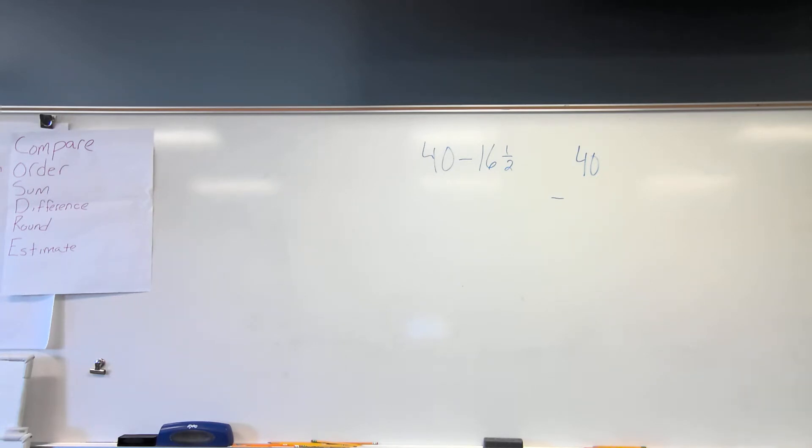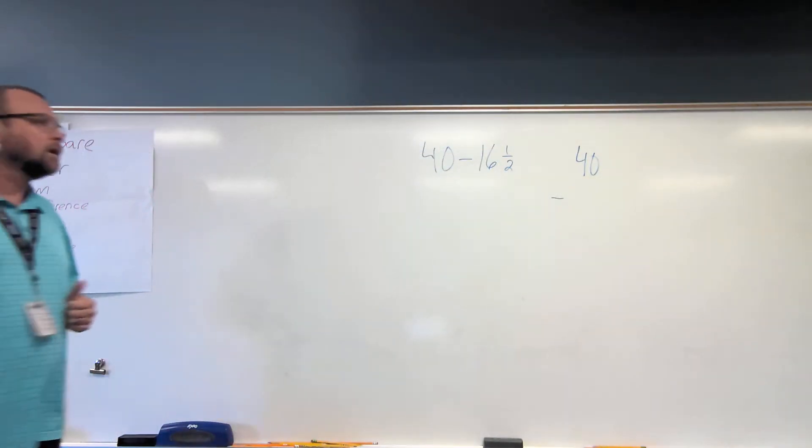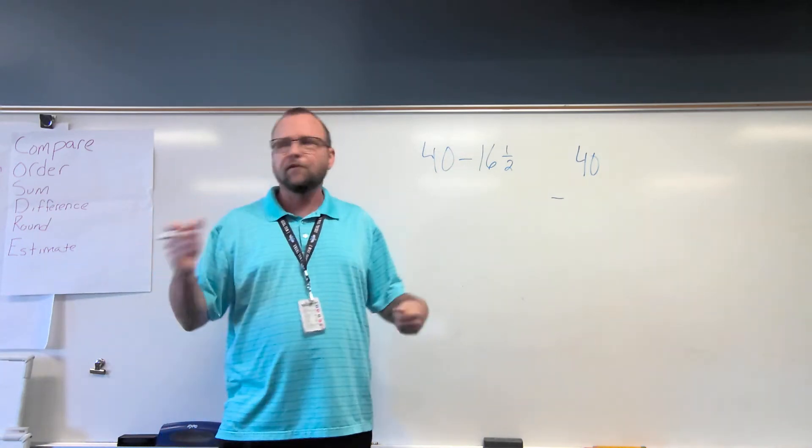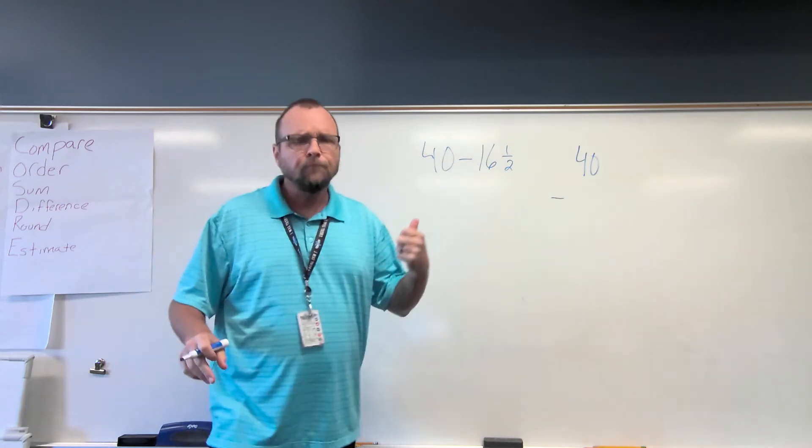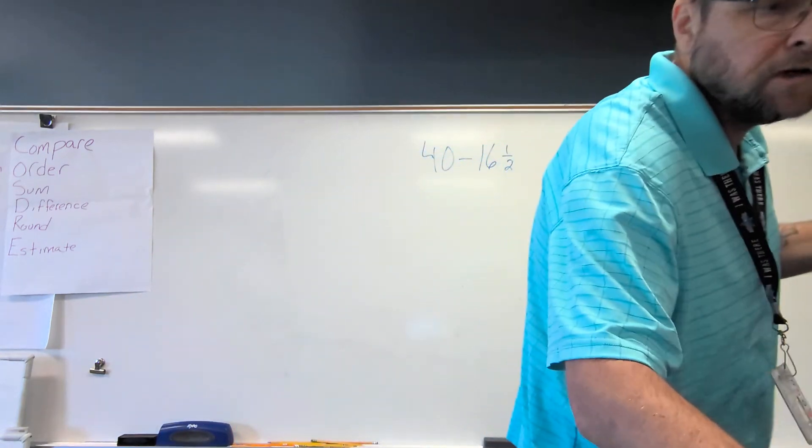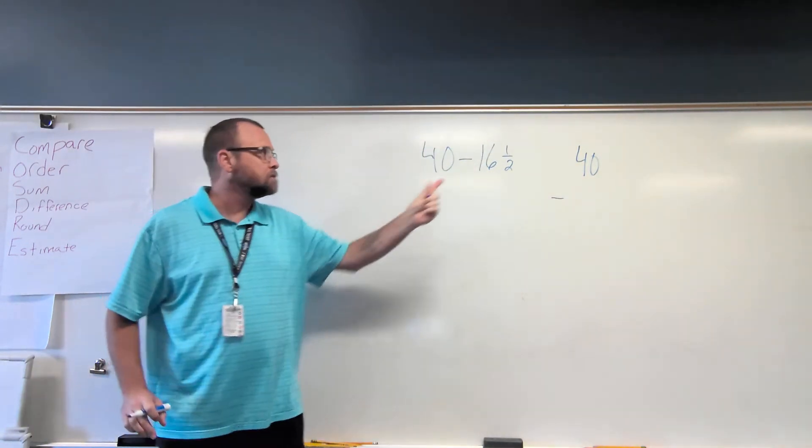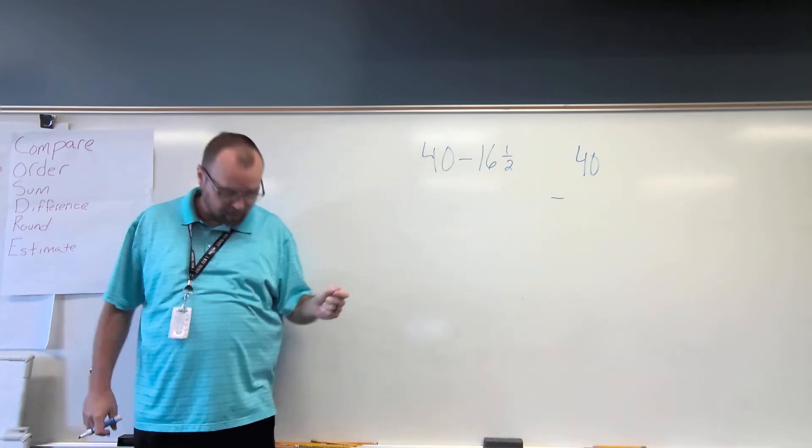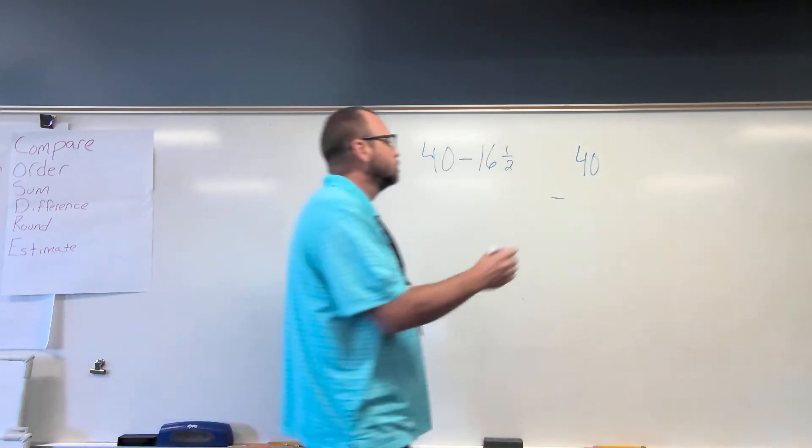Lauren, how would I write one half as a decimal? Okay, 0.50, 0.5. Think of a half a dollar. If you had half a dollar, you'd have 50 cents. That'd be 0.50. All right, so where is another question? Garvin, where is the decimal point? Since I'm going to change this to 16 and 0.5, where's my decimal point in the number 40? After the zero.